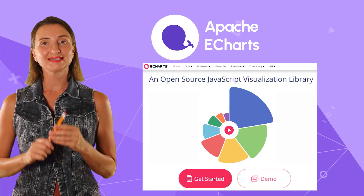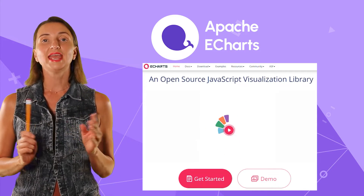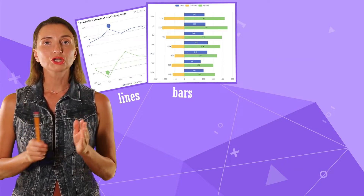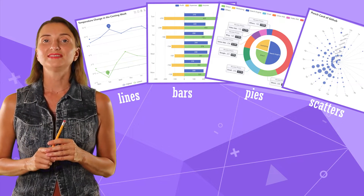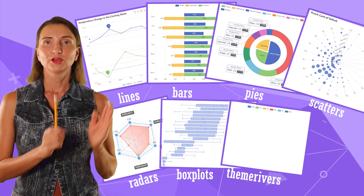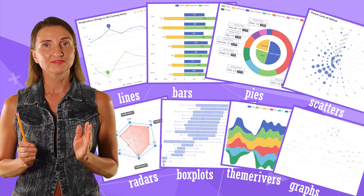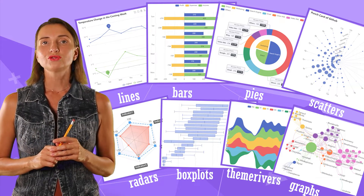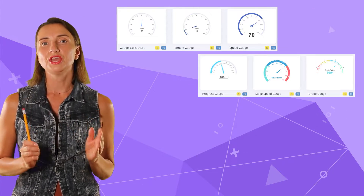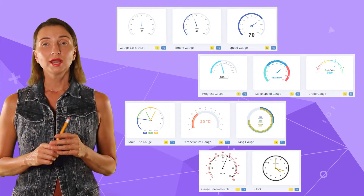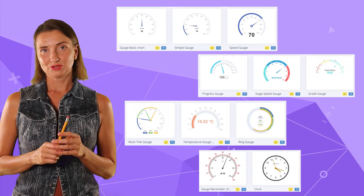Apache eCharts is an outstanding library to create any visualization you possibly could think of. From the basics like lines, bars, pies, and scatters to more advanced ones like radars, box plots, thin rivers, graphs, and many more. Every element is customizable. Just check out those various depictions of the gauge chart — they look as if they were created by different software, but it's merely visualization flexibility.